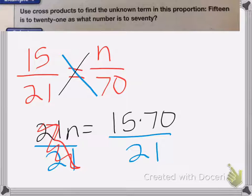So now I'm going to cancel out. So I know I can cancel the 21 and the 15, because I can divide both of those by 3. 15 divided by 3 is 5, and 21 divided by 3 is 7.